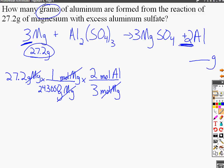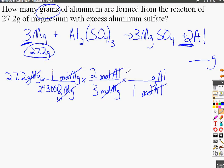Since the question asks for grams of aluminum, the next step is to convert from moles of aluminum to grams of aluminum. Moles go in the denominator so they cancel with the moles in the numerator. The periodic table tells us that one mole of aluminum has a molar mass of 26.9815 grams. The only remaining unit is grams of aluminum.